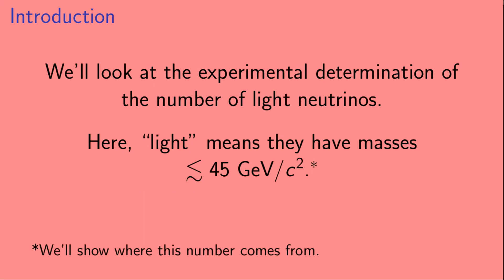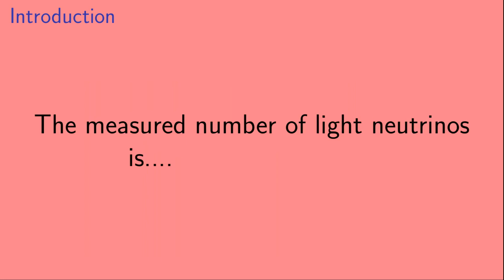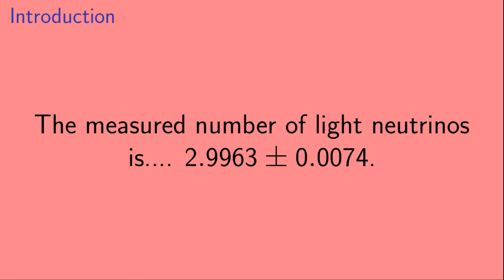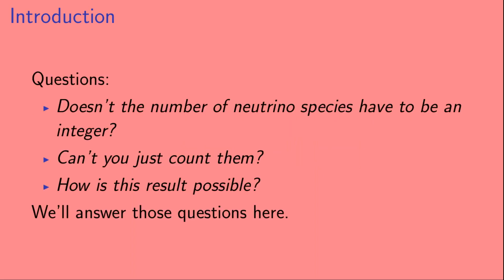Here we'll look at the experimental determination of the number of light neutrinos, where light means they have masses less than about 45 GeV over c squared. Toward the end of the video, we'll see where that number comes from. The measured number of light neutrinos is 2.9963 plus or minus 0.0074. This might bring to mind some questions: doesn't the number of neutrino species have to be an integer? Can't you just count them? And how is this result possible? We'll answer those questions in this video.